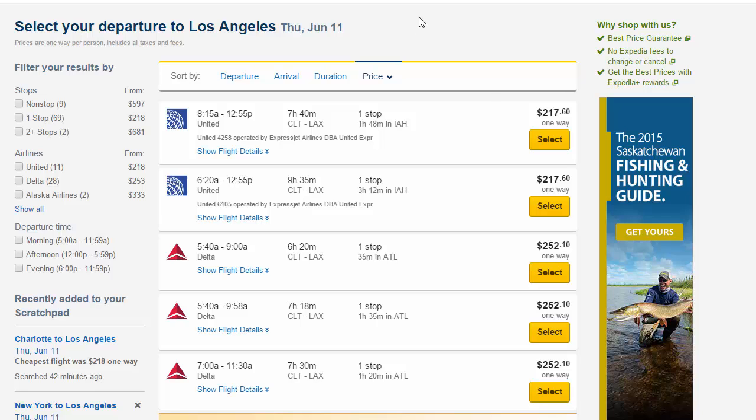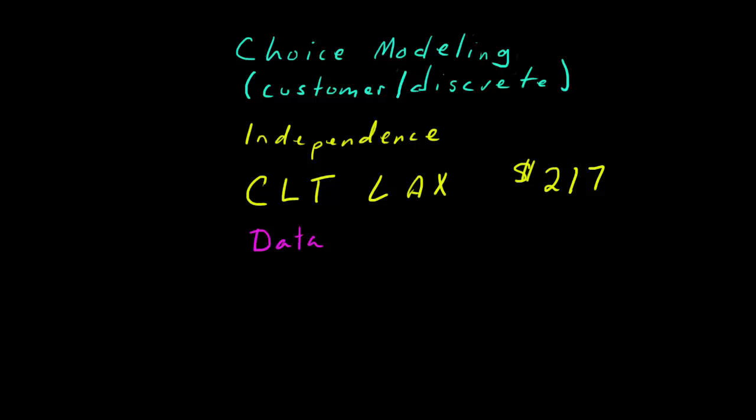So getting the data is number one. The next is, once you have the data, let's assume that you do have great data, it's all accurate, it's clean, and now you want to estimate your parameters. So the second thing that we have to consider is, can we estimate these parameters? So the second thing is parameter estimation.